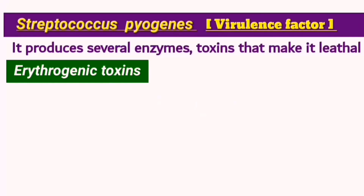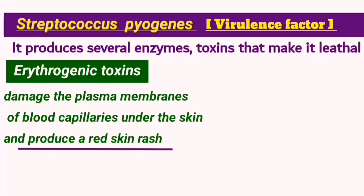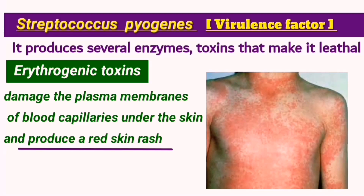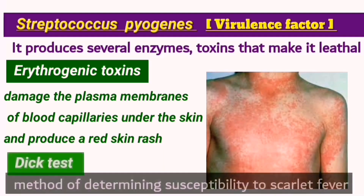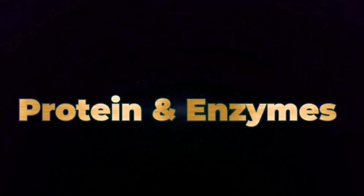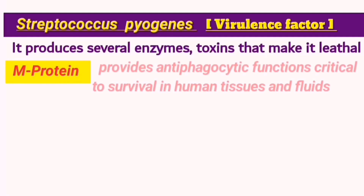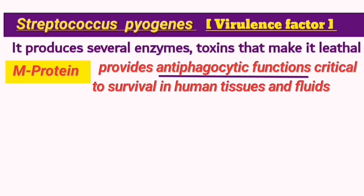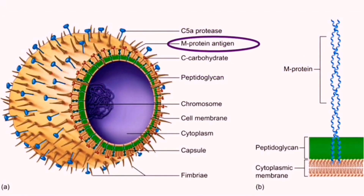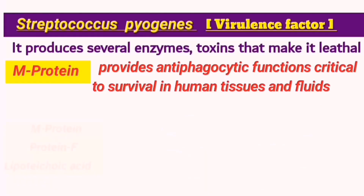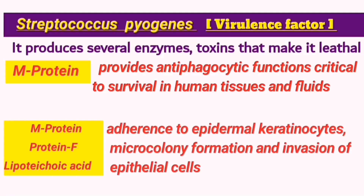S. pyogenes also produces erythrogenic toxins which are responsible for the red skin and rash during infection with scarlet fever, although this can be treated by taking an antitoxin as determined by the DIC test. In addition, it can produce some proteins and enzymes that prevent the immune system's white cells from attacking, like M proteins which provide a specific antiphagocytic function. There are around 80 types of M proteins in total that play an important role in causing infection. M proteins in combination with protein F and lipoteichoic acid participate in adherence of the bacteria to host cells, facilitating early infection.